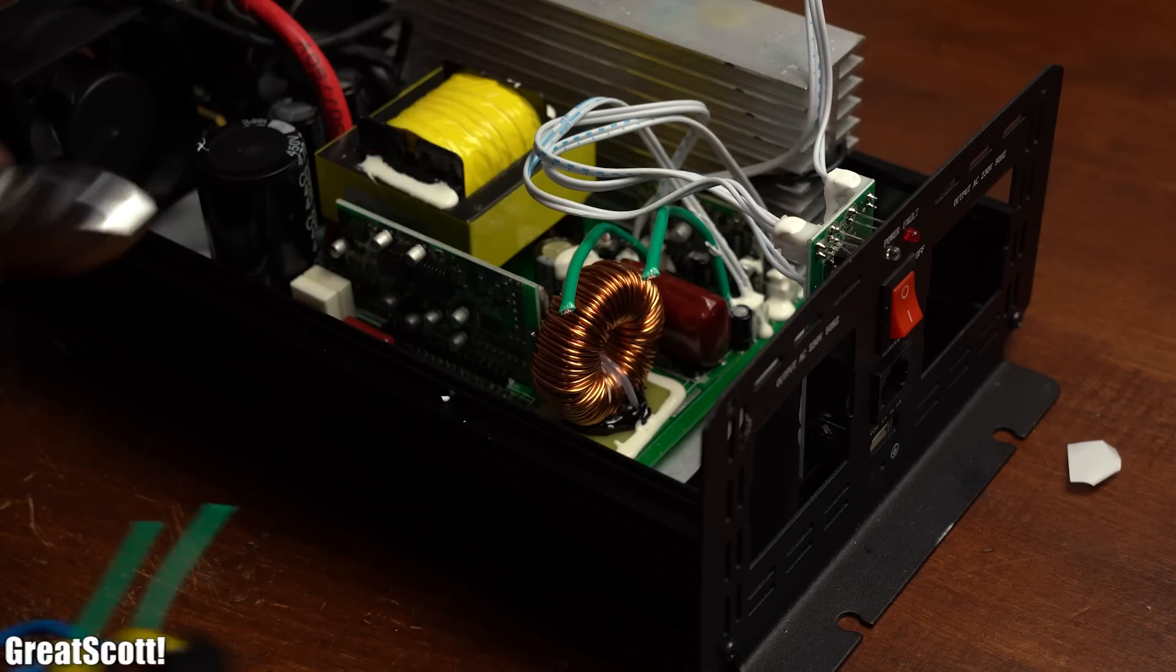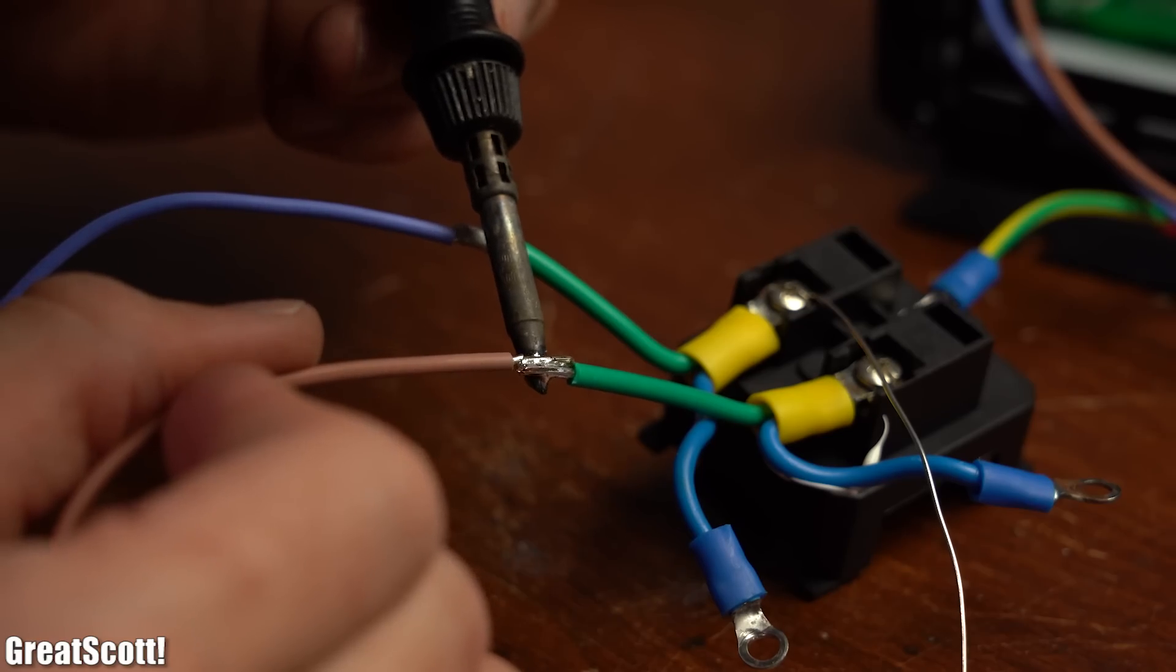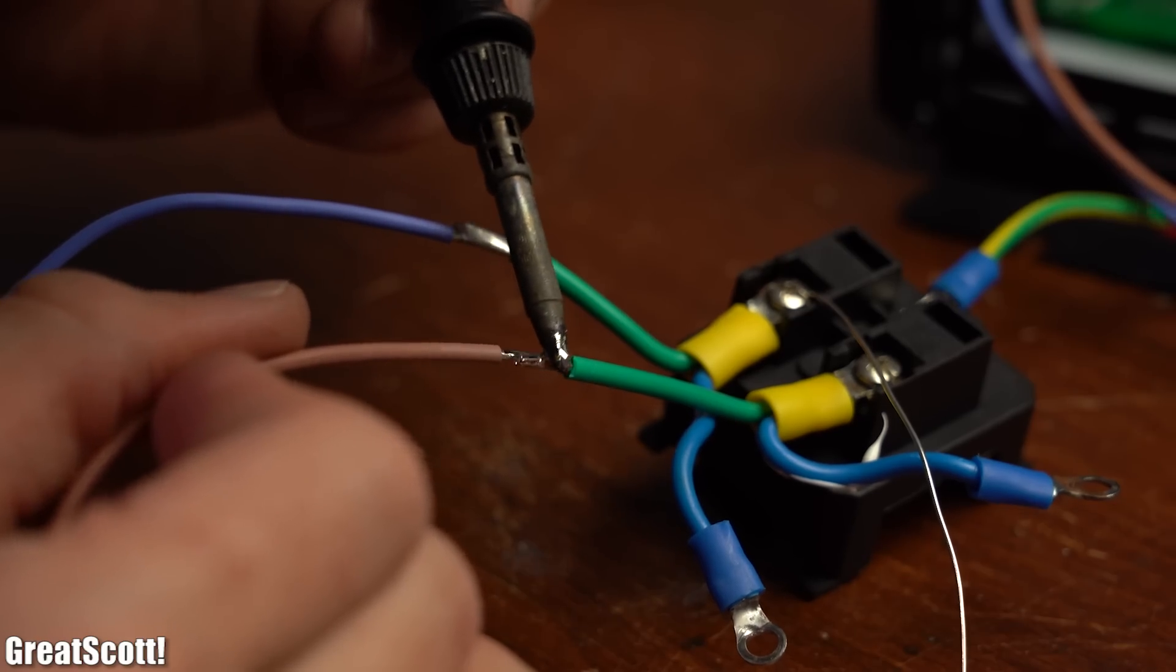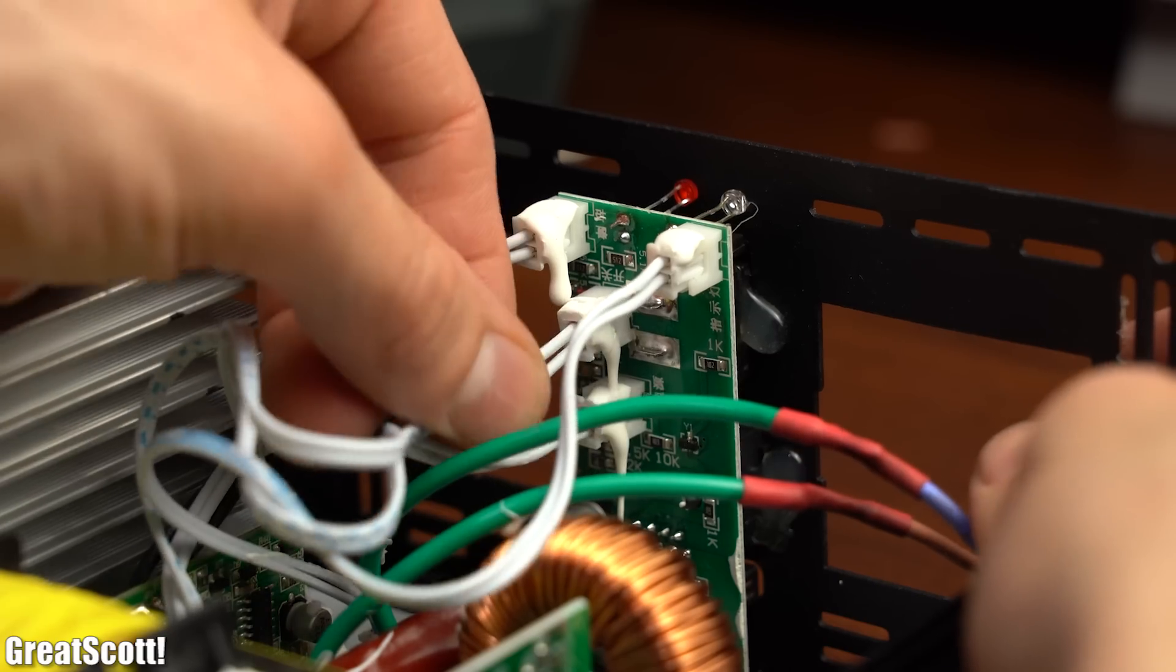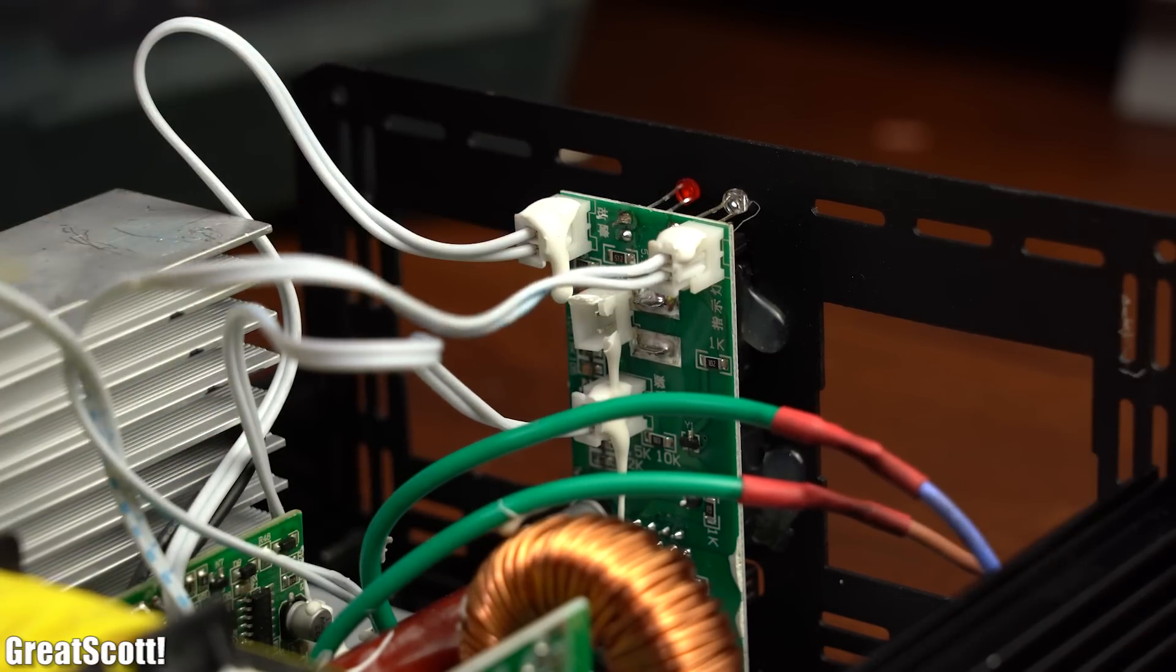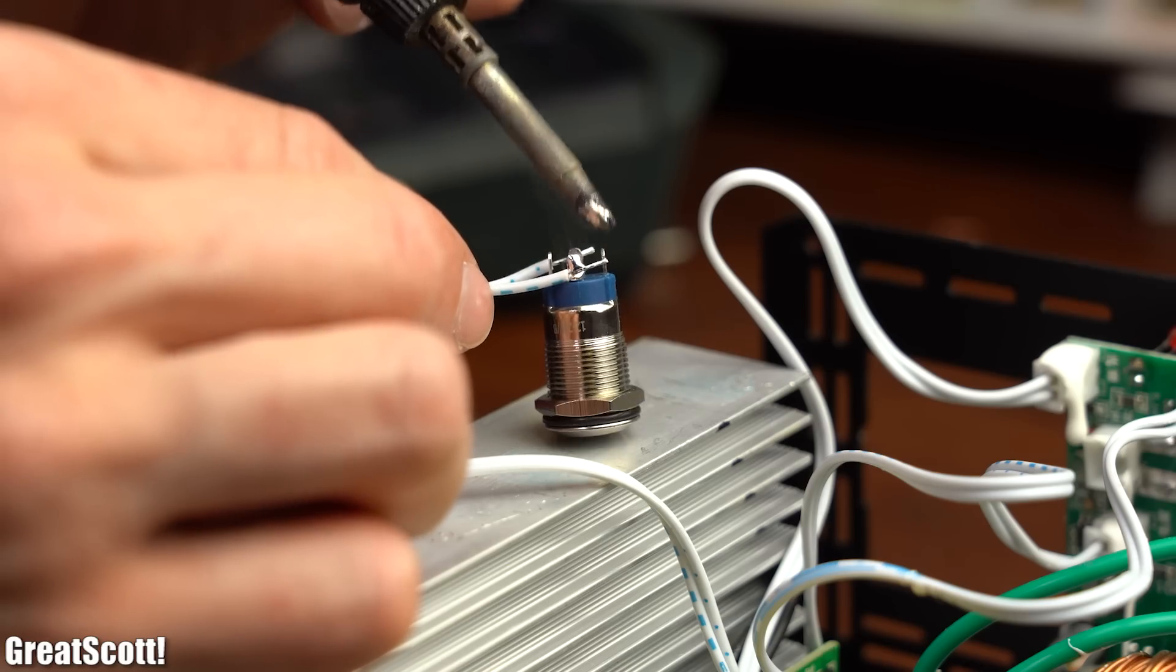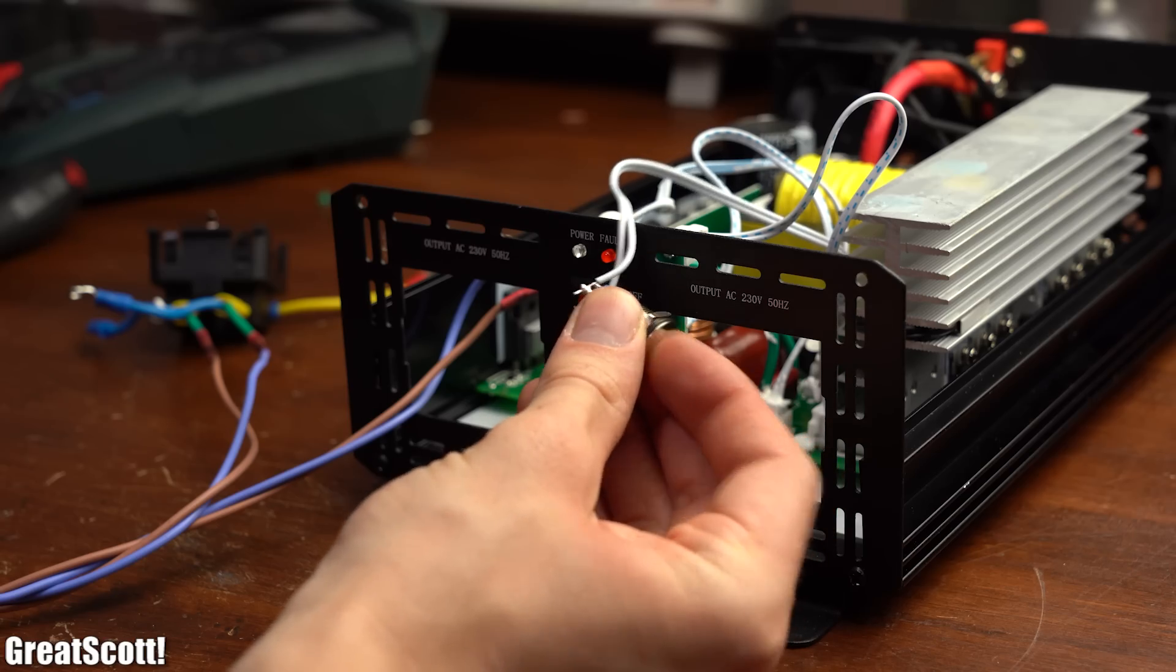I had to rip out the inverter's outlets and extend its wires in order to later mount it on the outside of the enclosure. And while I was at it I also found out what wires were responsible for turning the inverter on so that I can also extend them out.